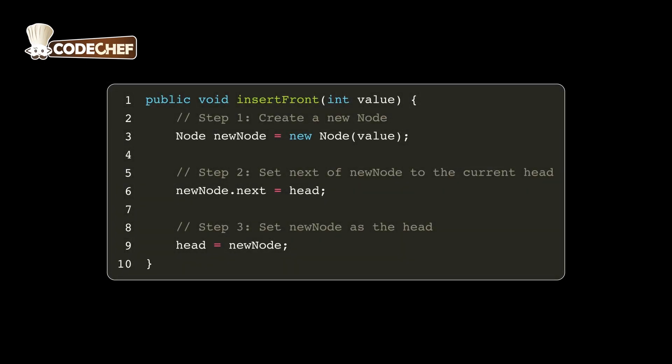Here's the insert front method, which inserts a new node at the beginning of a linked list. Step 1: We create a new node and assign it the value passed to the method. In our example, this value is 4.